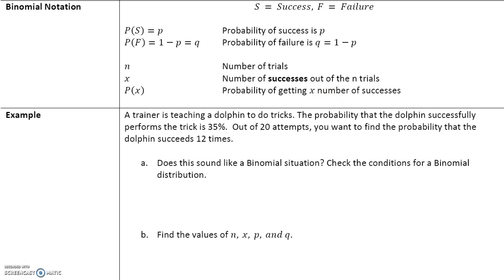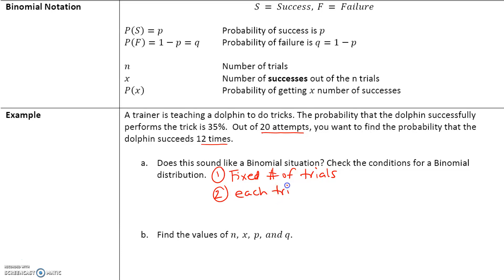Here's an example: a trainer is teaching a dolphin to do tricks. The probability that the dolphin successfully performs the trick is 35%. Out of 20 attempts, you want to find the probability that the dolphin succeeds exactly 12 times. First, does this sound like a binomial distribution? There are three conditions to be met. One: we need a fixed number of trials — we have 20 attempts, so yes. Two: each trial must be independent — whether one dolphin can do the trick has no bearing on whether the next attempt can, so each trial is considered independent.